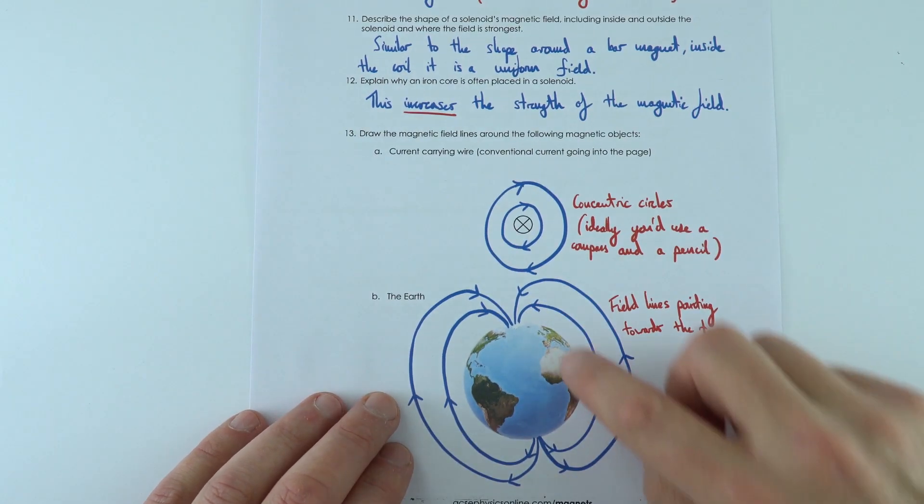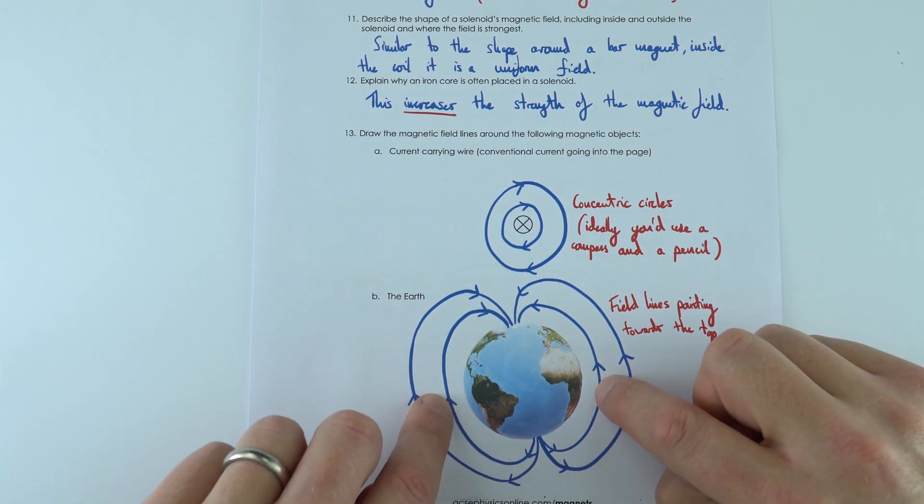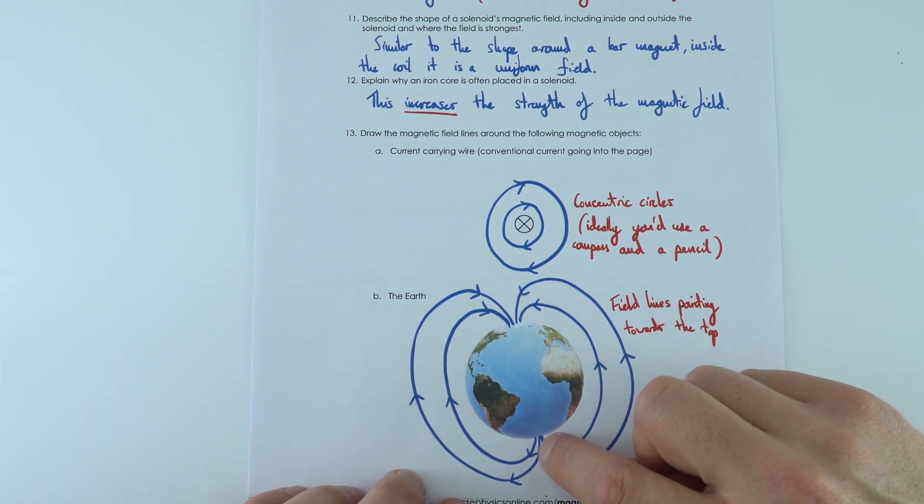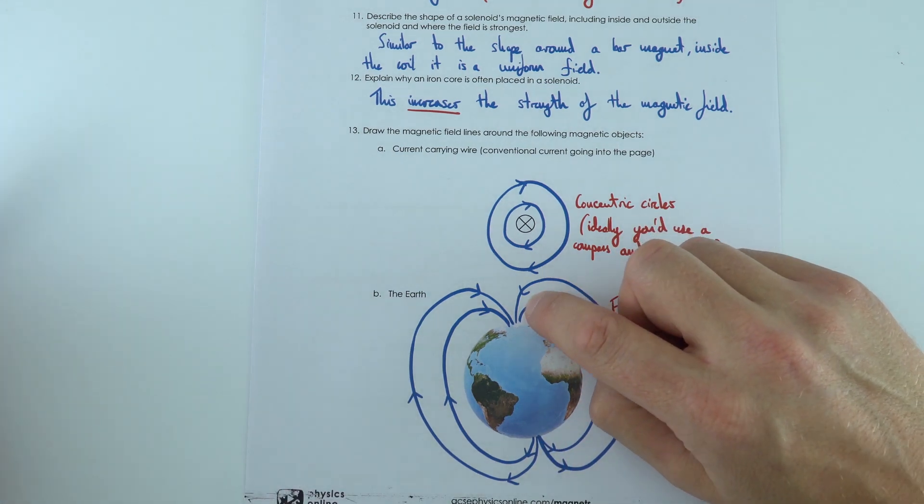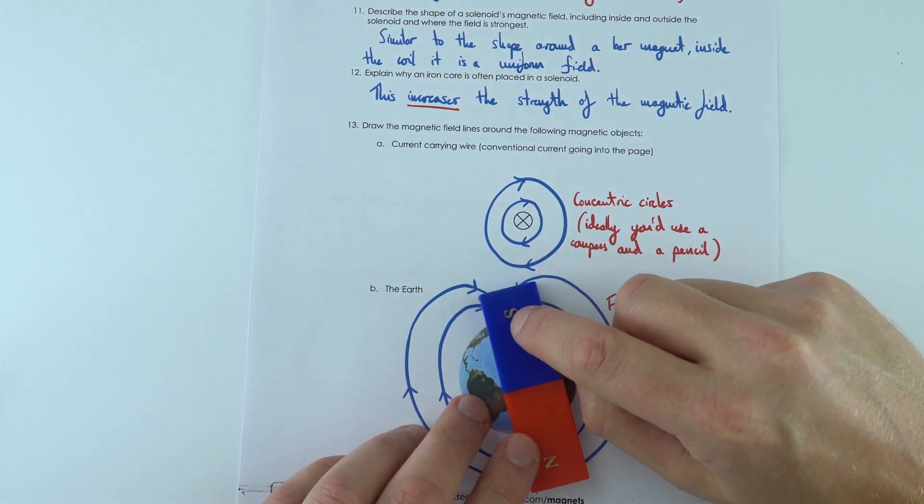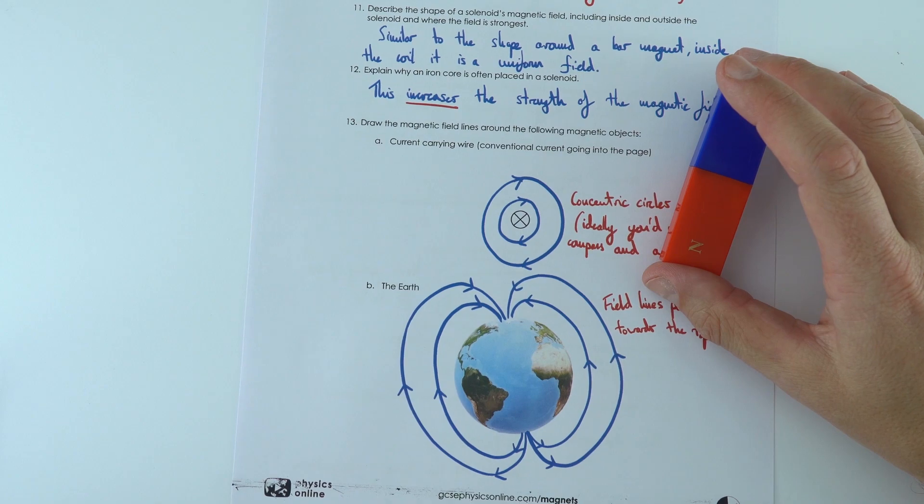And around the earth, what we have is again the same shape that we'd have around the bar magnet. But this time they're going from the south pole of the earth up to the north pole. Because what we have at the top of the world is the south pole of a magnet that's actually at the north pole of the earth.